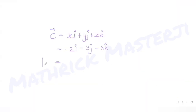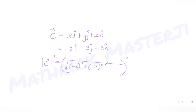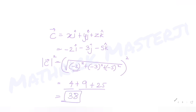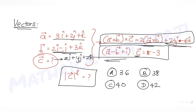The question asks for the square of the magnitude of c. So |c|² = (−2)² + (−3)² + (−5)² = 4 + 9 + 25 = 38. Checking the answer choices, option B which is 38 is the correct answer.